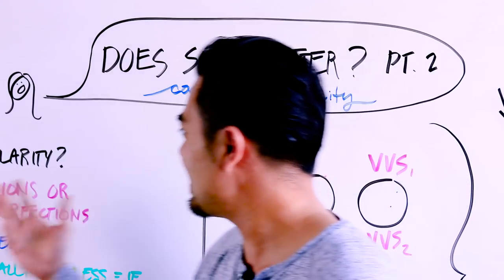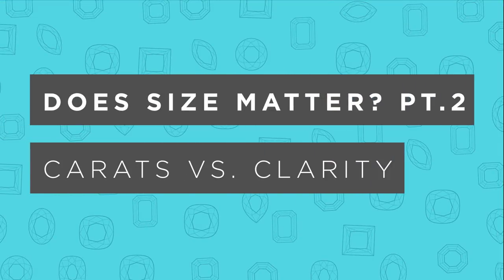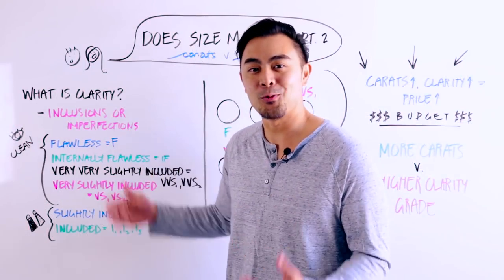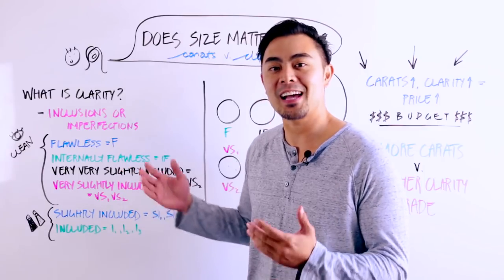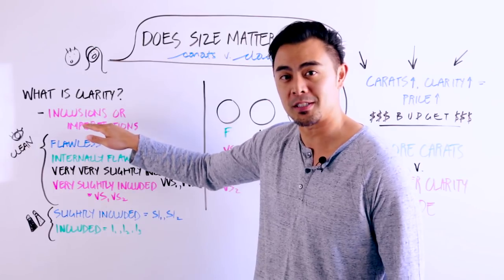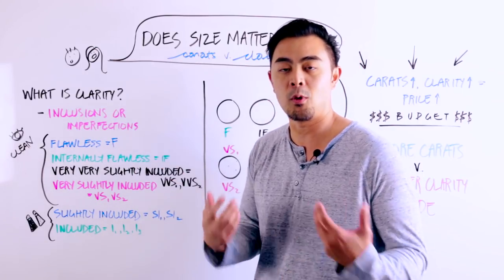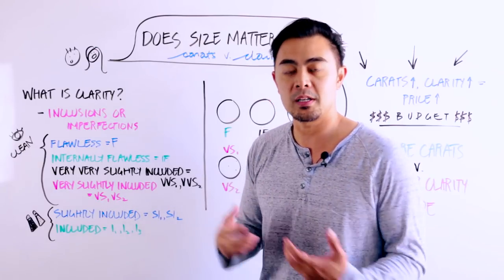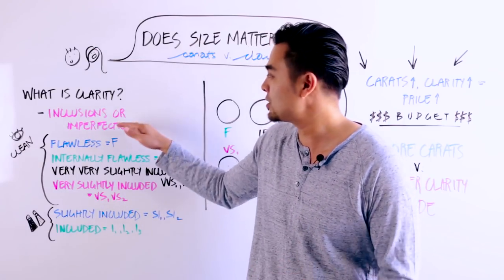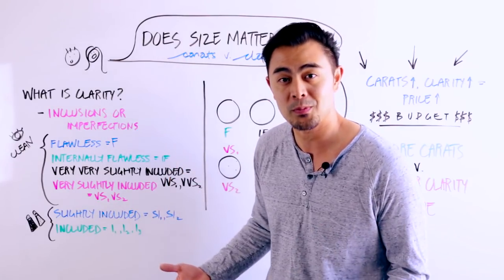So what is the clarity grade? Well, first and foremost, clarity is actually a gemstone grade. So basically what it grades are the inclusions or imperfections of a gemstone. So it could be a moissanite, a diamond, a lab created, or a natural because inclusions do exist as well as imperfections do exist in lab created gemstones as well.